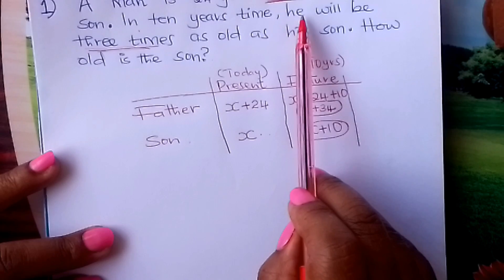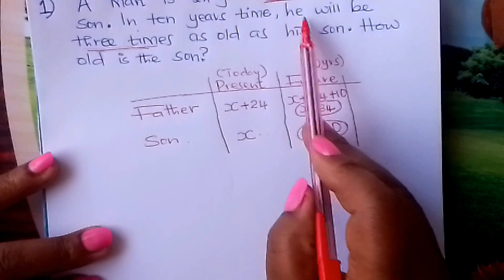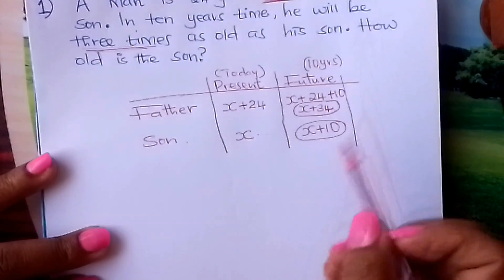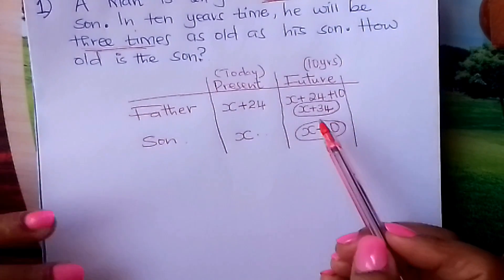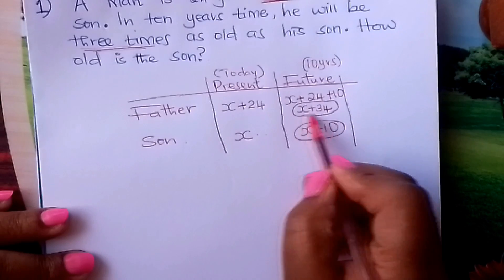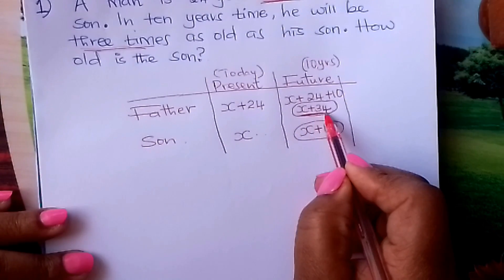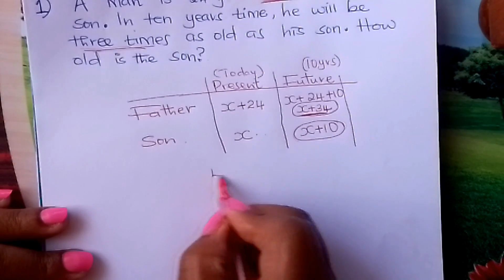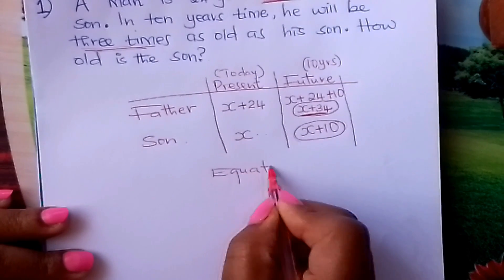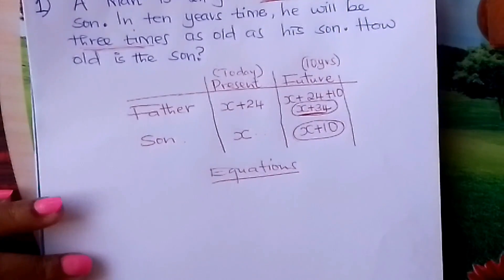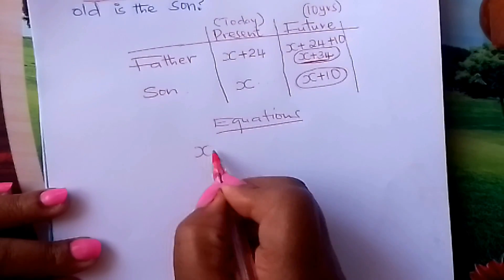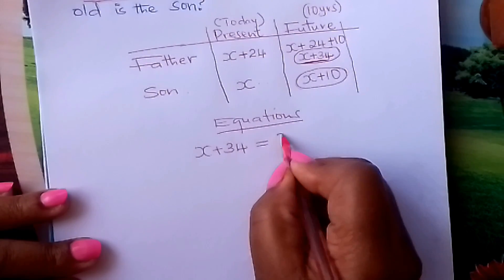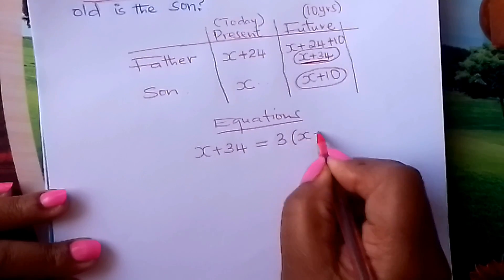We continue. We are told that in 10 years' time, the father will be three times as old as his son. So here, the age of the father will be three times the age of the son. We make an equation: the age of the father is three times the age of the son.